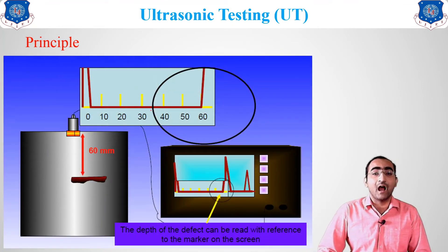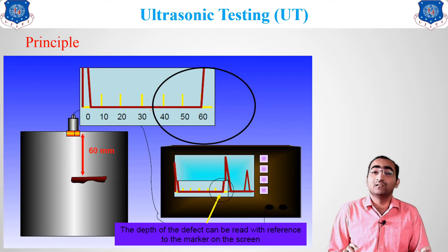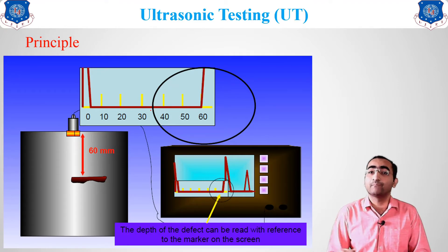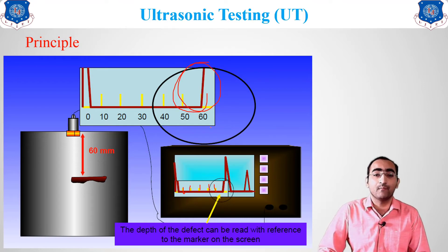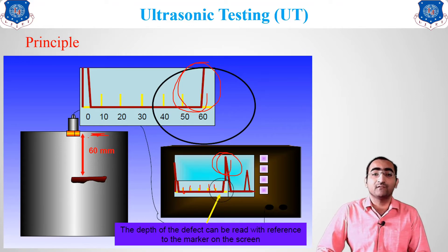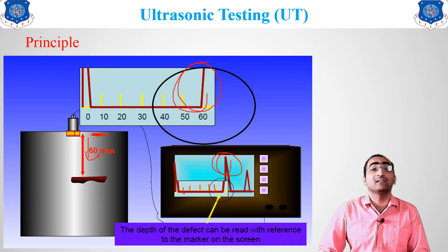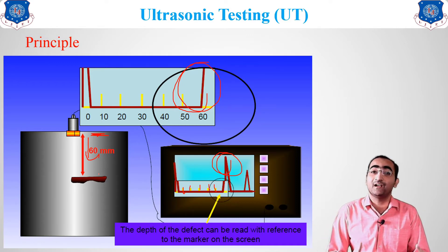We can locate and detect the defect inside the material. By measuring the distance on the CRO screen — for example, if the reading shows 60 mm — we can determine that the defect is located 60 mm below the top surface. This tells us the exact location and depth of the defect.